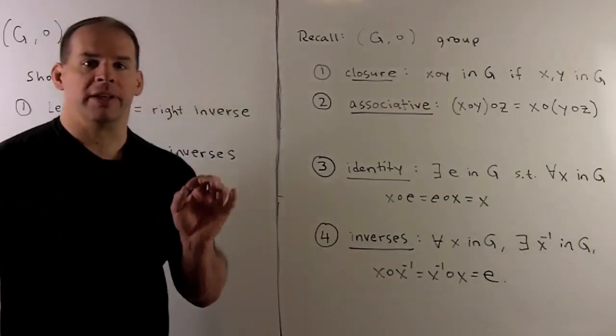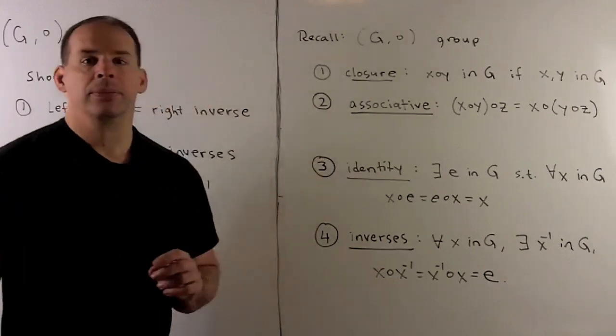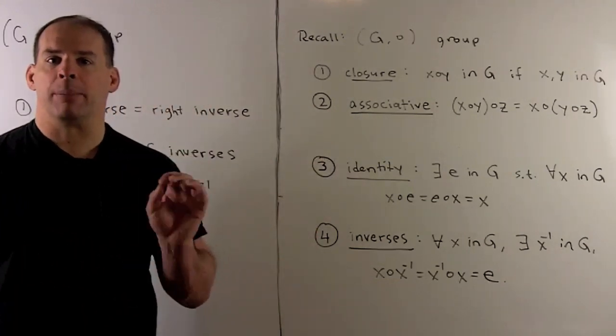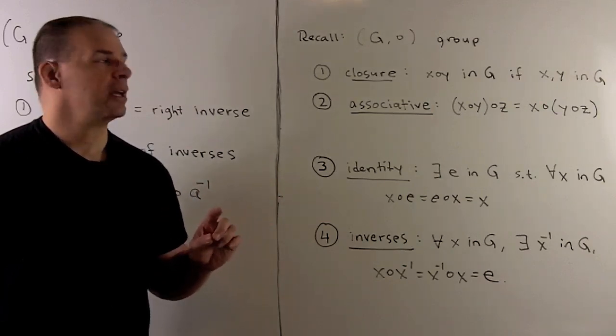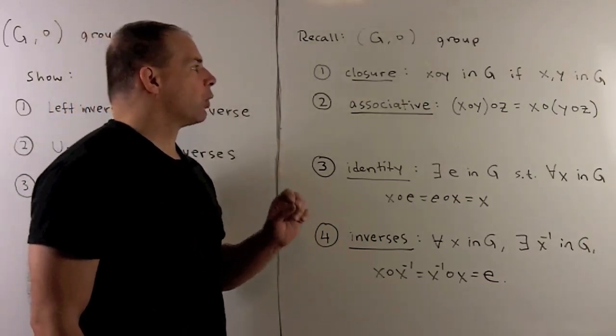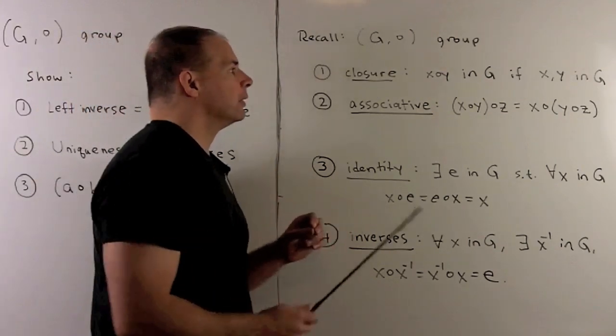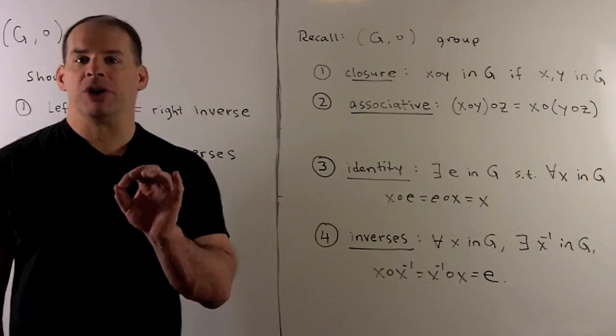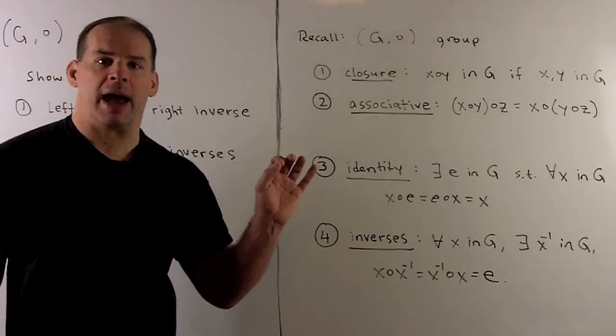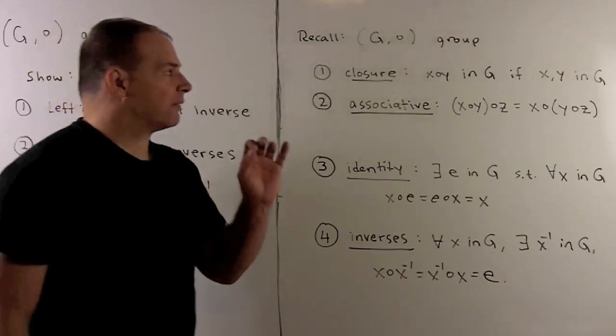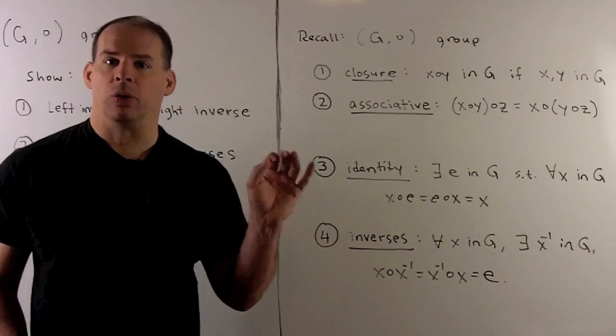Now let's recall the definition of a group. So G is going to be a set, the multiplication circle is going to be a binary operation on our set back into itself. To be a group, we need the following four properties. First, we have closure. So because we have a binary operation of the group back into itself, defined this way, that automatically happens. If we're in the wild, I would have to show if we have any two elements in the group, when we multiply, we land back in the group.